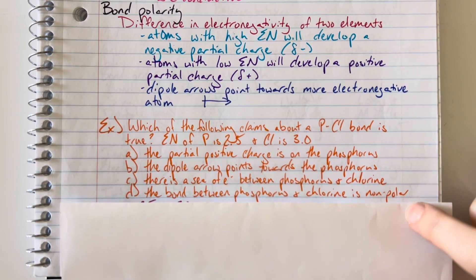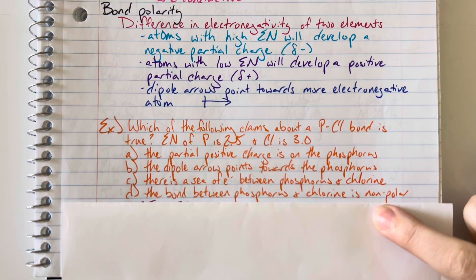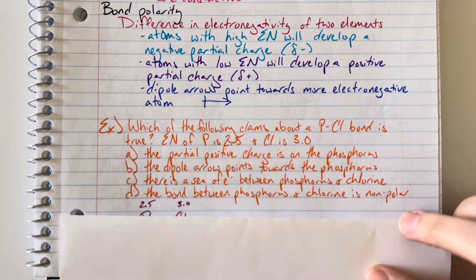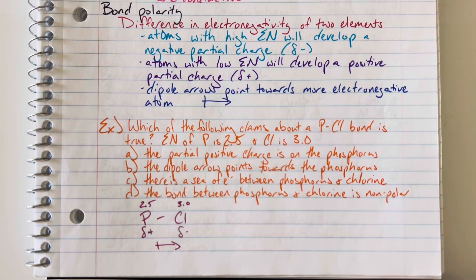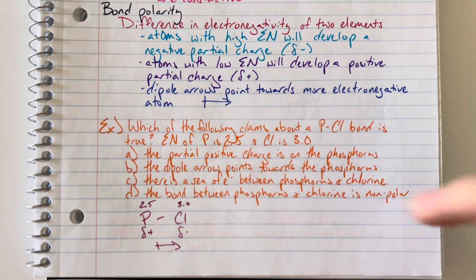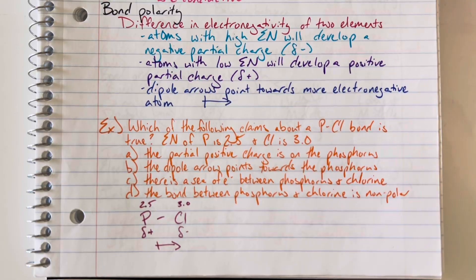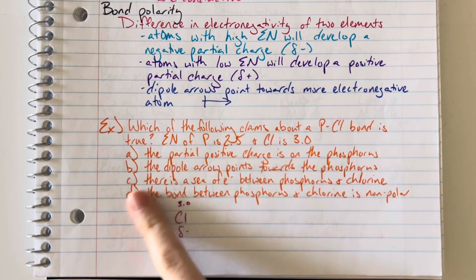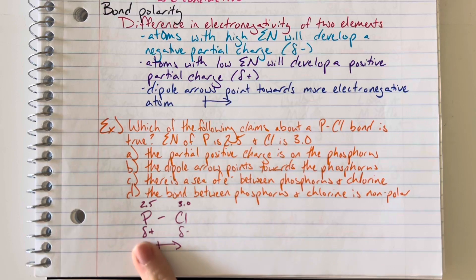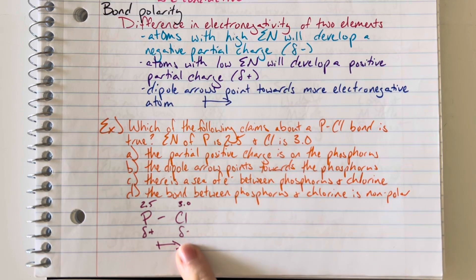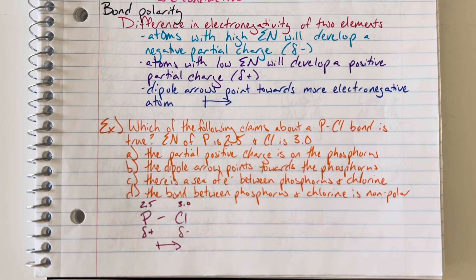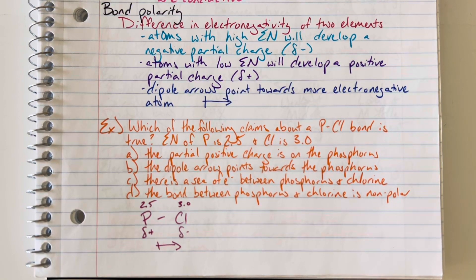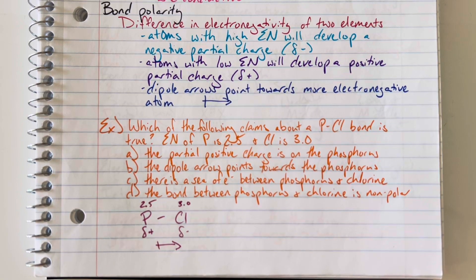And then D, the bond between phosphorus and chlorine is non-polar. My bond differential between phosphorus and chlorine is 0.5, which does put me in the polar category here. So I would be able to draw my bond here where I would have a partial positive on phosphorus, partial negative on chlorine, my dipole arrow pointing toward chlorine. And again, that all because chlorine has a higher electronegativity than phosphorus does.